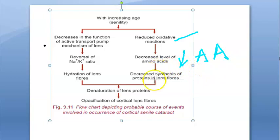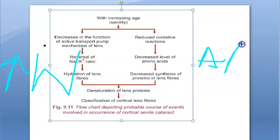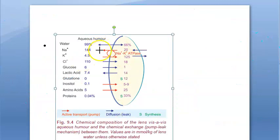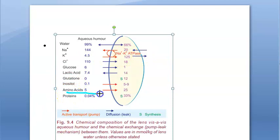With reduced oxidative reactions, there is also a decrease in the level of amino acids. With no amino acids, there is decreased synthesis of lens proteins, leading to denaturation and opacification. So on one pathway, water is increasing (hydration), and on the other, amino acids are decreasing so no new lens fiber proteins can be synthesized. Both pathways add up to cause opacification of the cortex. The active transport pump involved here is sodium-potassium ATPase.